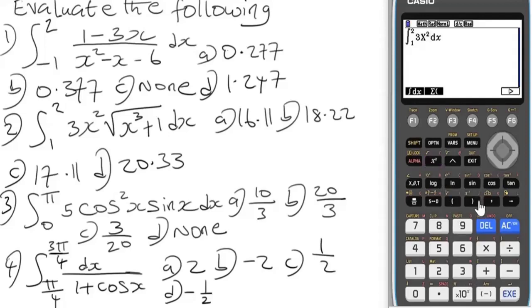Then we have square roots. To bring the square root, press Shift, this square button. Then we have alpha x cube, then plus one. That's all. Press equals: 16.11. So the answer is option A.